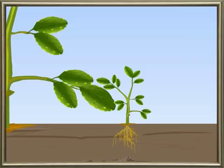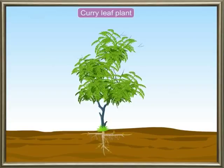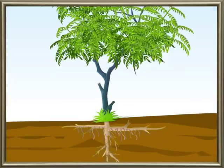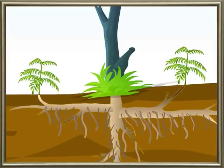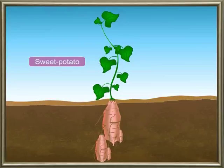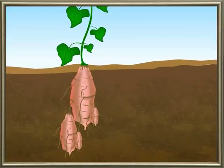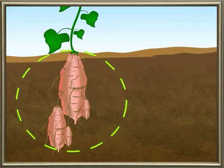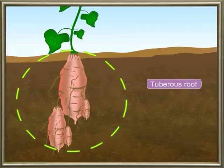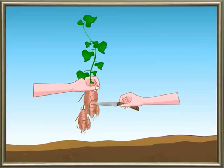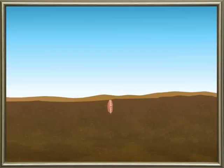In the same way, leaves of Begonia also give rise to new plants. You find small plants around a curry leaf plant — new plants arise from the roots of the curry leaf plant, showing vegetative propagation through roots. Plants like sweet potato and tapioca have swollen roots where food is stored; these are called tuberous roots.